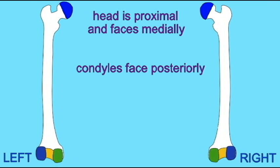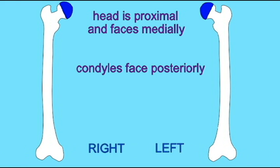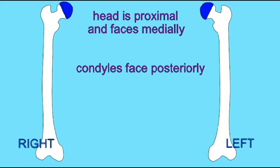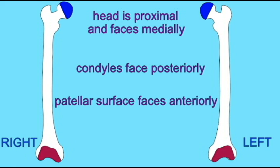The most obvious feature at the distal end of the femur, which helps you to identify the posterior side, are the condyles. Obviously, when the knee flexes, the lower leg flexes posteriorly. And these two condyles are the knobs which allow the tibia to flex posteriorly at the knee joint.